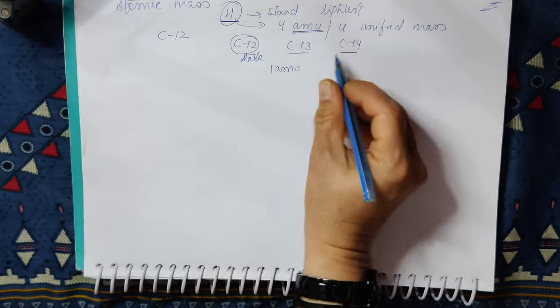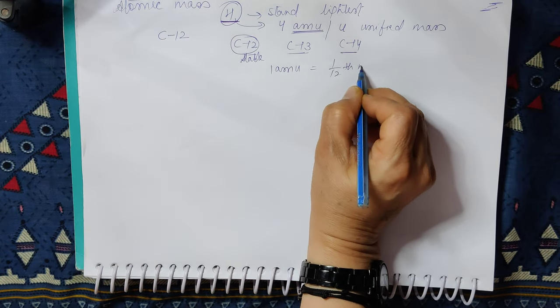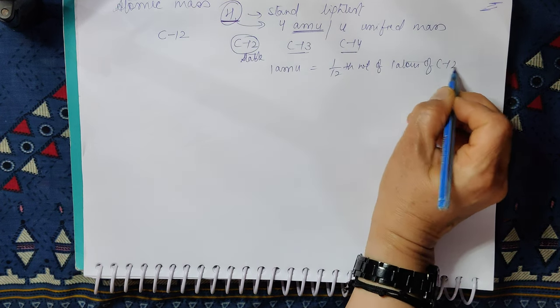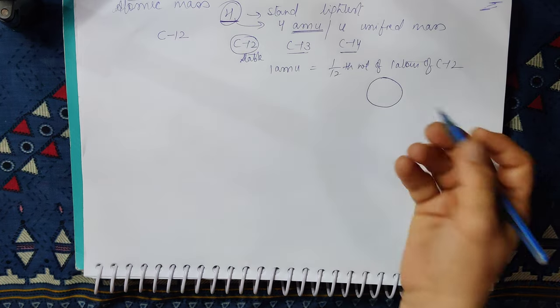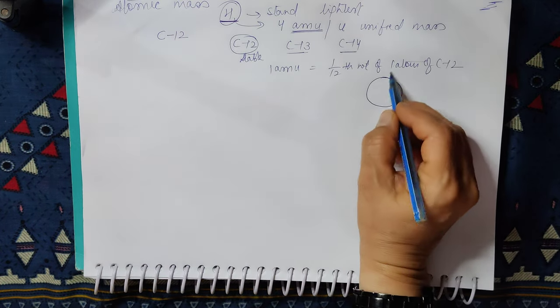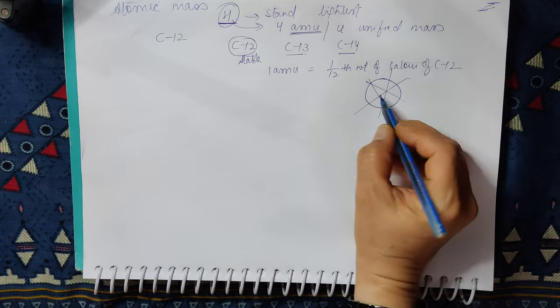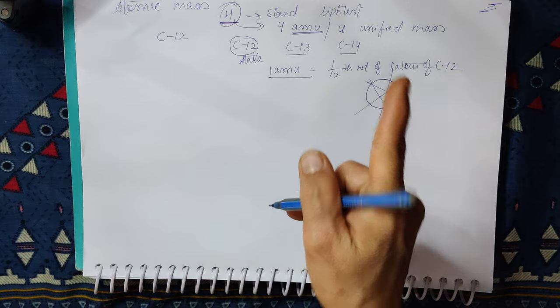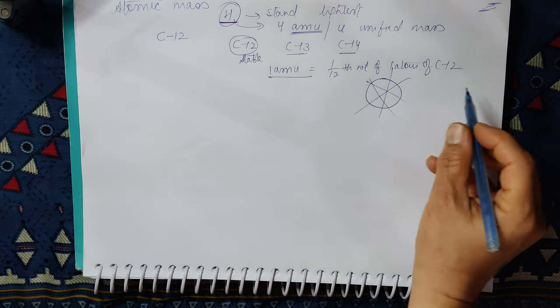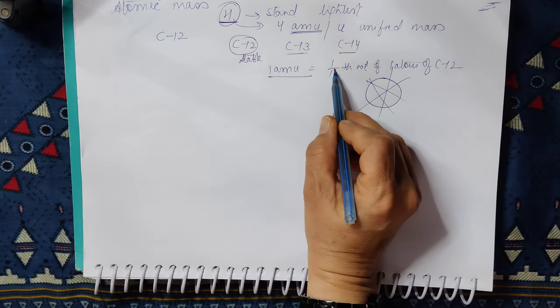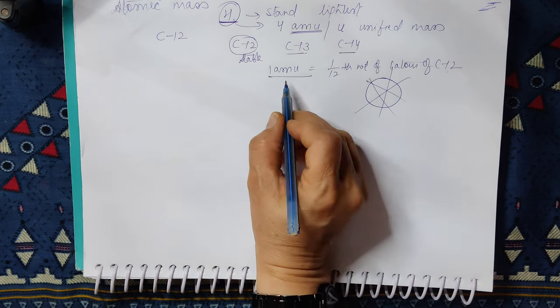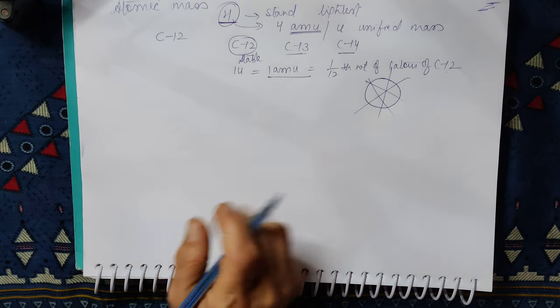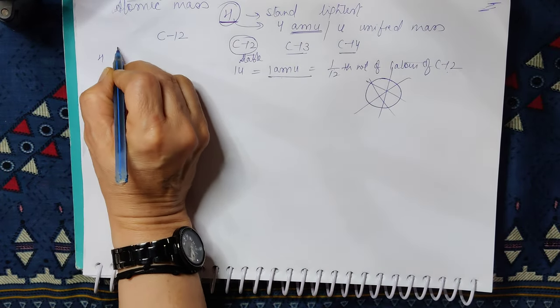1 AMU is 1/12 of weight of 1 atom of carbon-12. One carbon atom, of course we do not see it, it is imagination. Take the atom, divide it into 12 equal pieces. Take one piece. We have called it 1 AMU. The amount of weight of one piece, we will call it 1 AMU or 1 U, and the rest of the weights with respect to this measure.